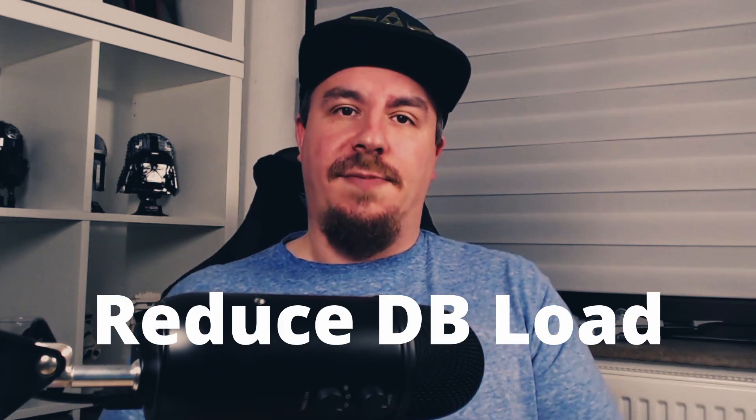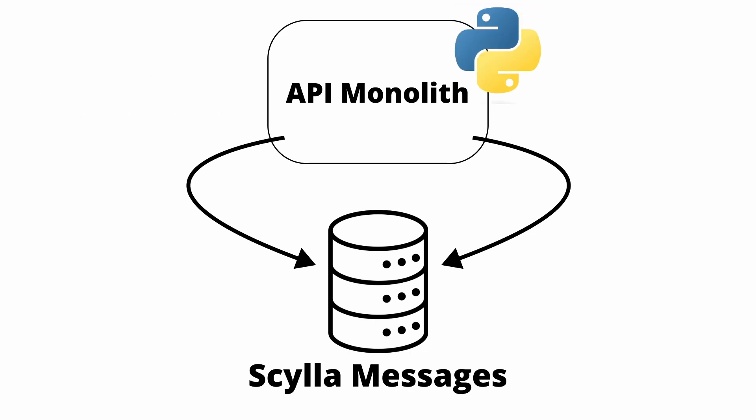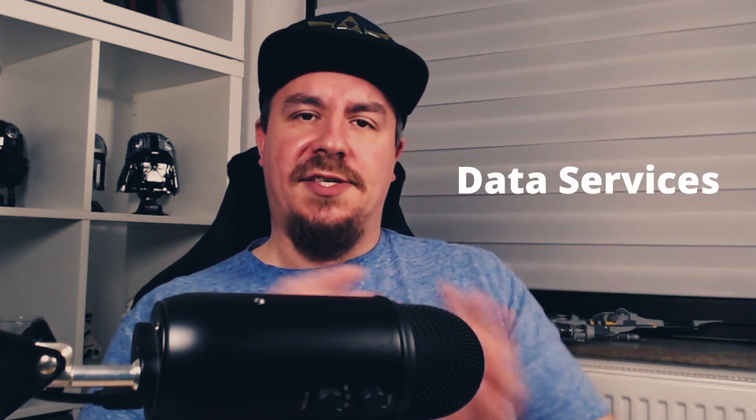This led to step two of their migration: reduce the load on the database cluster. It's worth looking at a simplified diagram of Discord's API architecture first. In front of everything sits Discord's REST API monolith, implemented in Python. This API is responsible for the delivery of messages from a channel. Interestingly, the API had direct access to the messages database cluster without any intermediary service. To reduce the load on the cluster, the engineers implemented intermediary services they simply call data services.